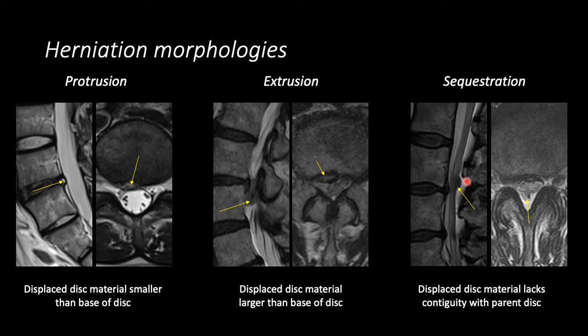The grading of lumbar central canal stenosis, as well as neural foramen stenosis, can be subjective, although there have been attempts to standardize this. The system I use takes into consideration the amount of CSF left inside the thecal sac as well as what's happening to the nerve roots. In the normal situation, CSF is preserved and there's no aggregation of nerve roots. With mild stenosis, there's some effacement of the thecal sac and CSF, but nerves remain separated. With moderate stenosis, we begin to see some aggregation of nerve roots. With severe stenosis, you don't see any CSF between the nerve roots of the cauda equina.